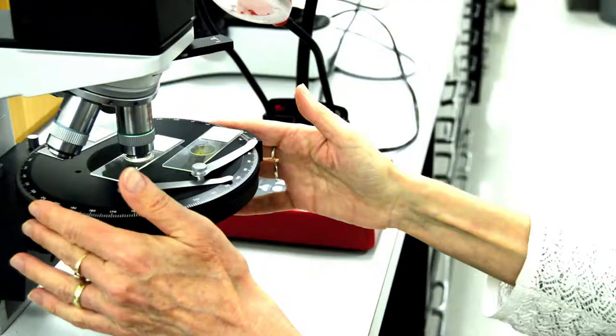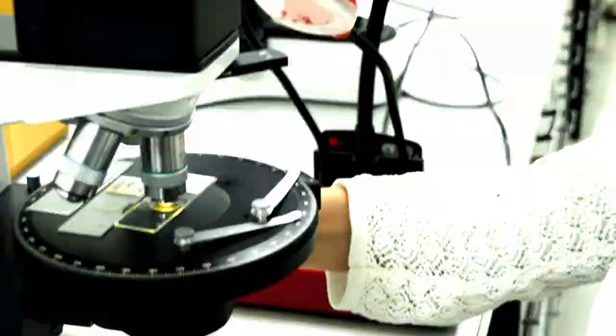By using that, I can identify it as orpiment, which is a danger because it's made with arsenic.